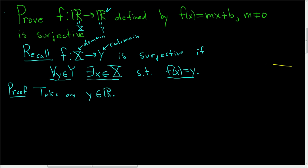Let's figure out what that x value is. We want f(x) to equal y, so mx + b equals y. We can solve for x by subtracting b, so mx equals y minus b. Then divide by m, and we can do that because m is not zero.